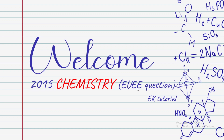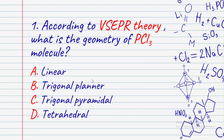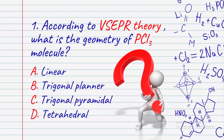This is a 2015 chemistry matrix question. According to VSEPR theory, what is the geometry of the phosphorus trichloride (PCl3) molecule? Options: A) linear, B) trigonal planar, C) trigonal pyramidal, D) tetrahedral. What is the geometrical shape of phosphorus trichloride? Let's find the shape.